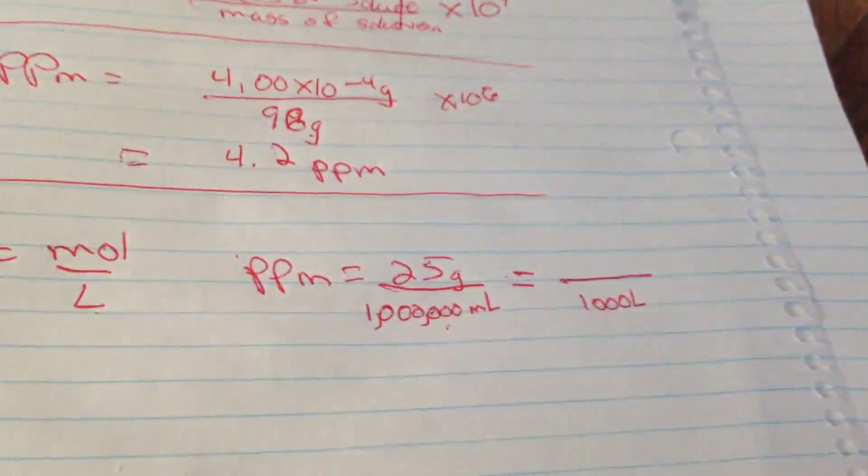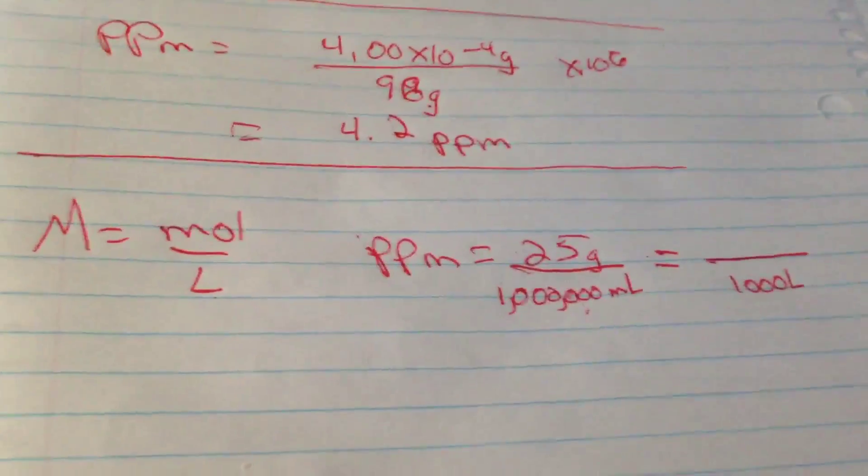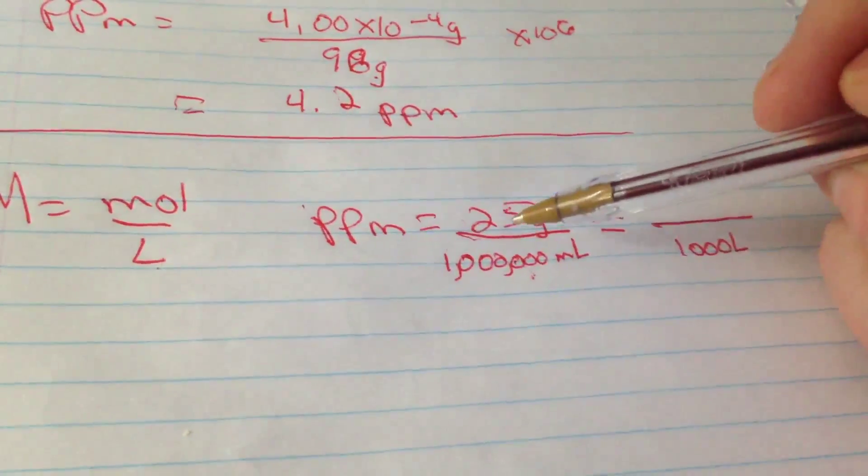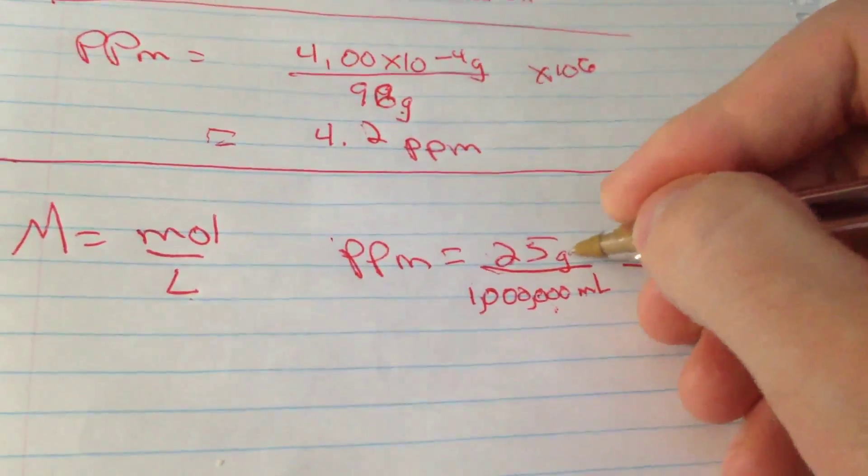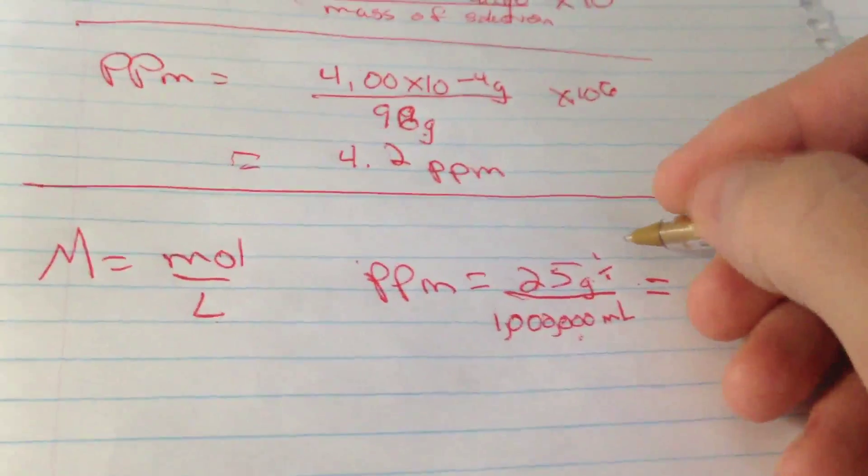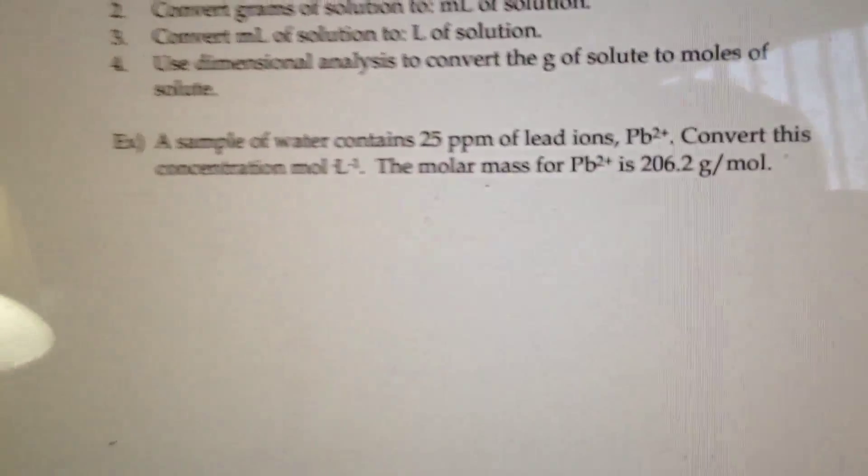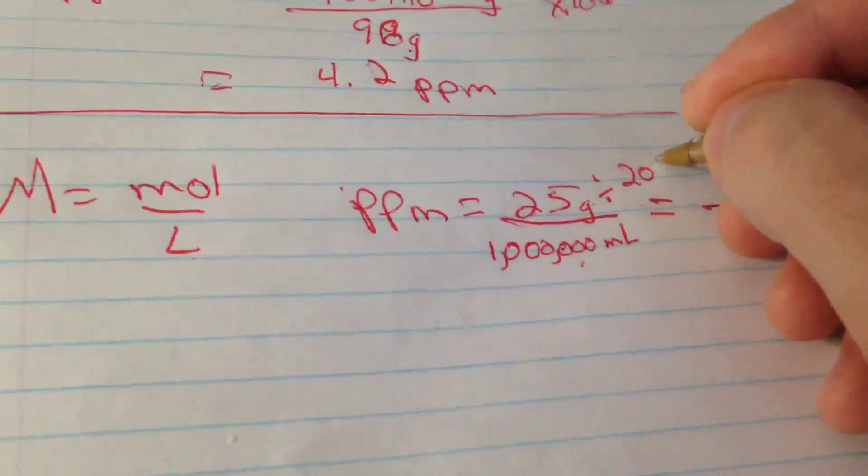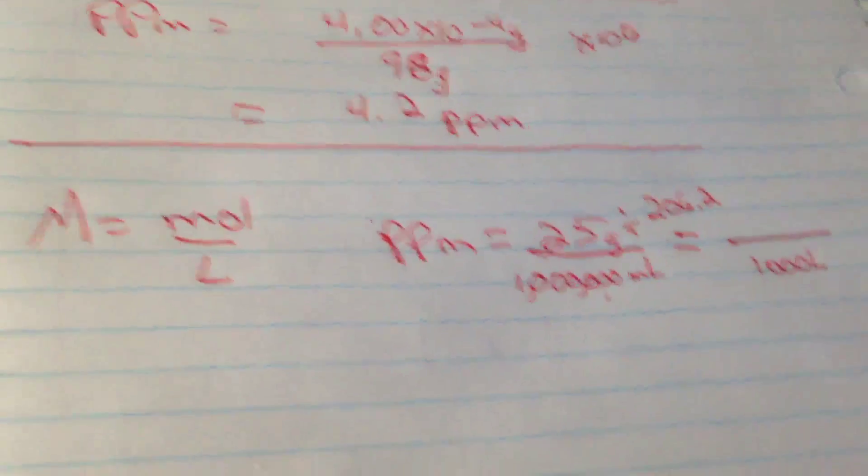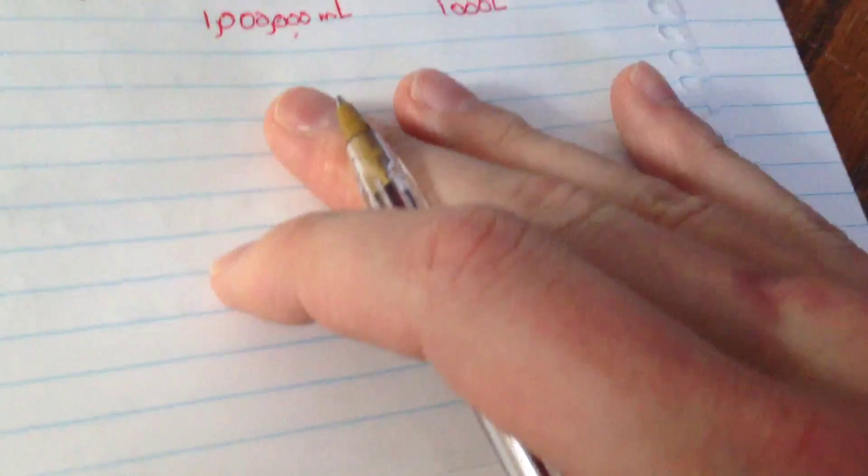Okay, now to go from 25 grams to moles, you have to go mass divided by your molar mass, which it says in the question was, focus, 206.2. So I'm gonna go 25 divided by 206.2. And if I do that really quick,